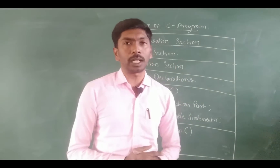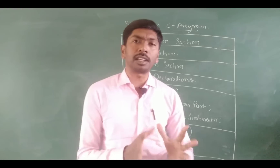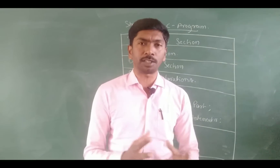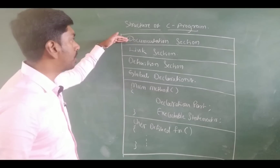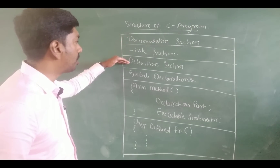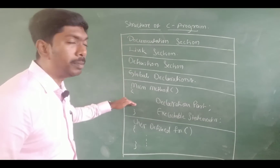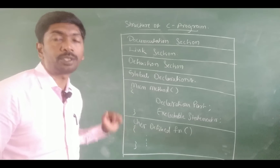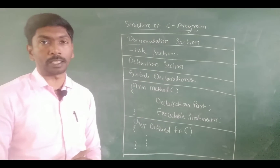In C programming, there are six different sections. Documentation section, link section, definition section, global declarations, main method, and user defined functions. These are the six different sections.